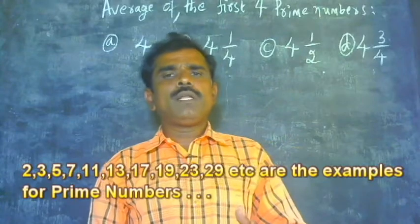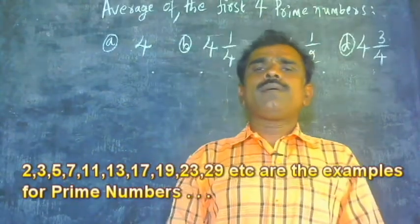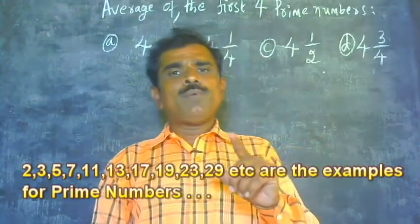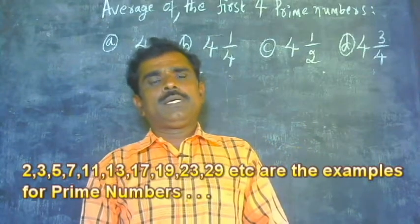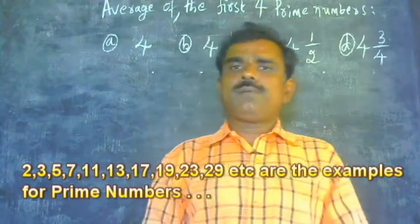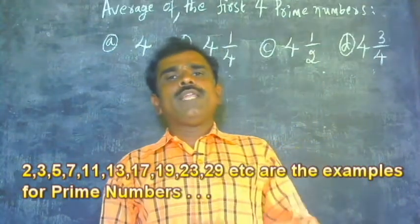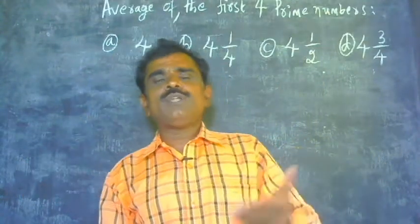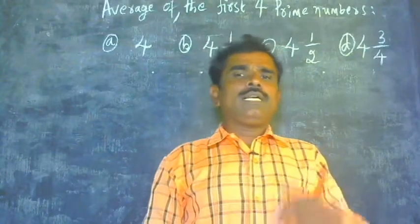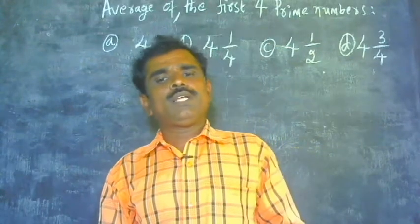For example, 2 is the first prime number, 2 is divisible by 1 and 2. 3 is the next prime number, 3 is divisible by 1 and 3. The next prime number is 5, 5 is also divisible by 1 and 5. And take 7, 7 is divisible by 1 and 7.